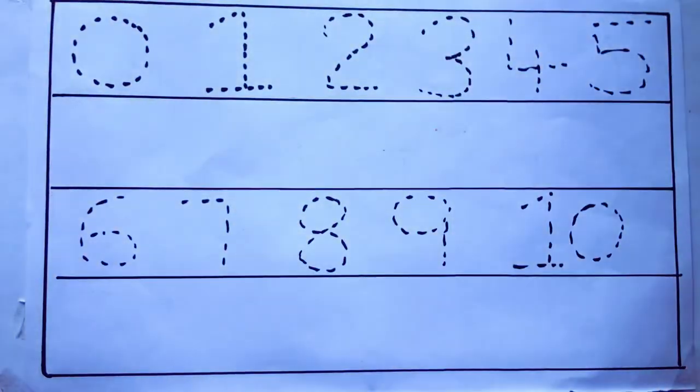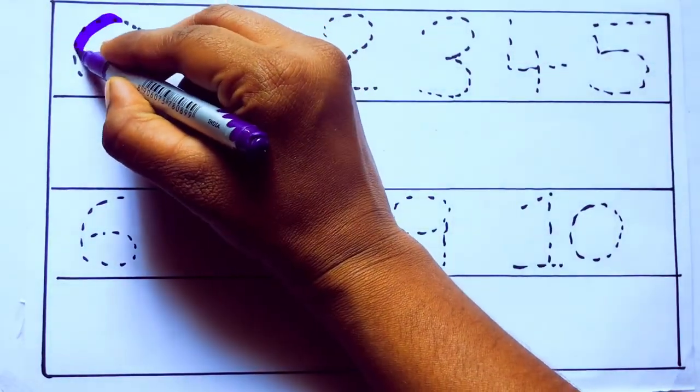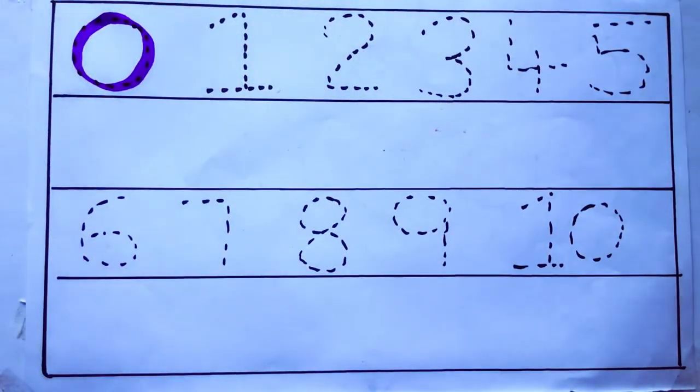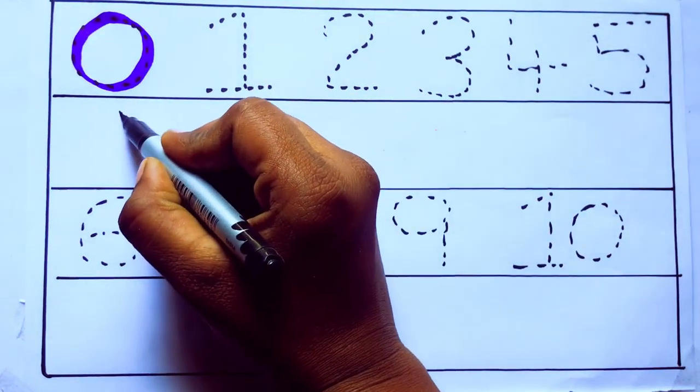Let's draw numbers. Violet color 0, Z-E-R-O. Violet color 0.